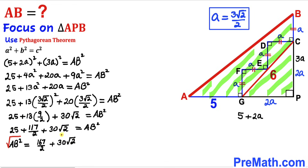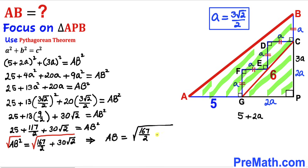Now we undo the square by taking the square root on both sides. Therefore AB = √(167/2 + 30√2) units.